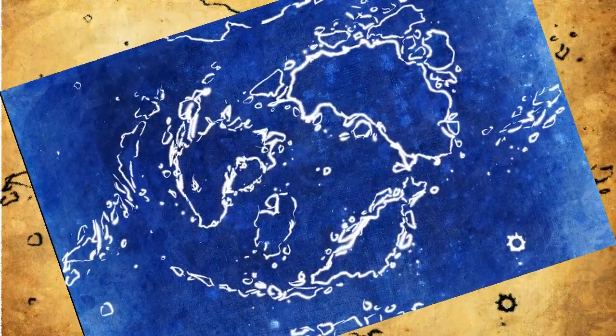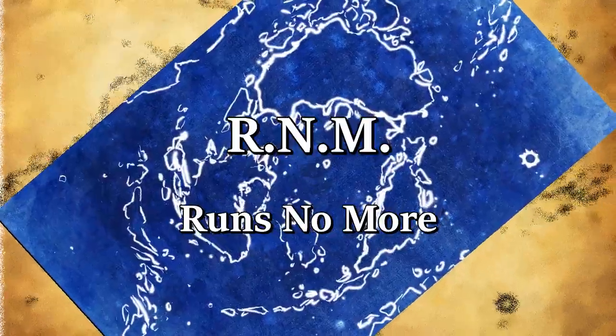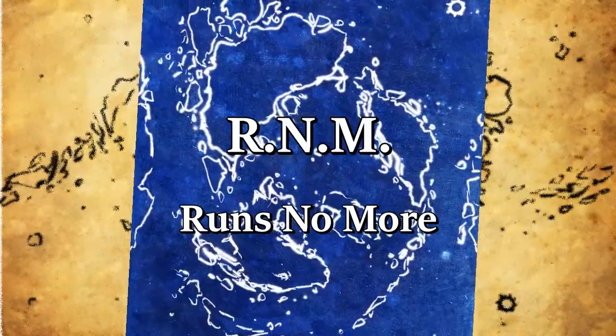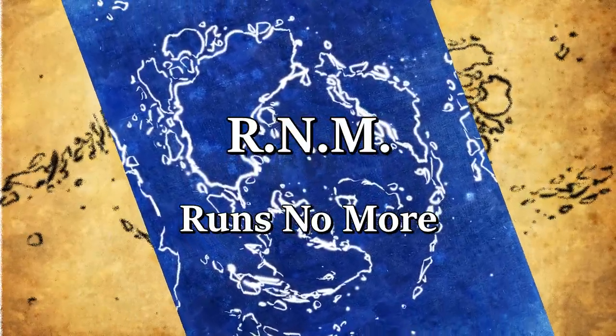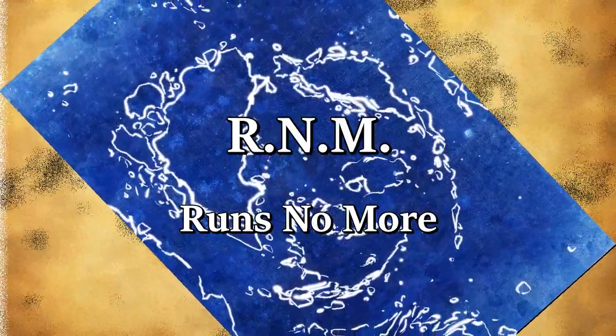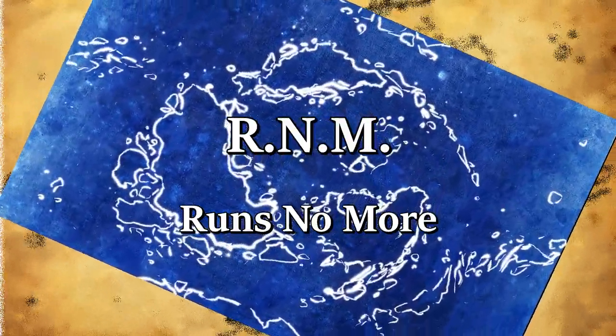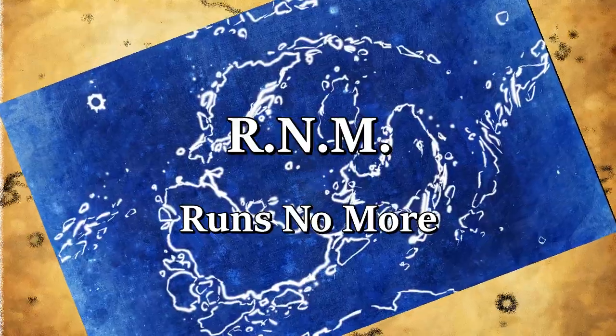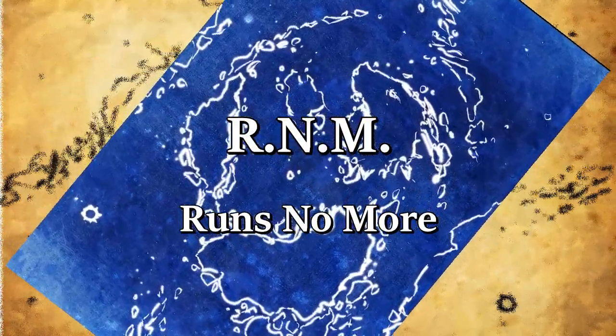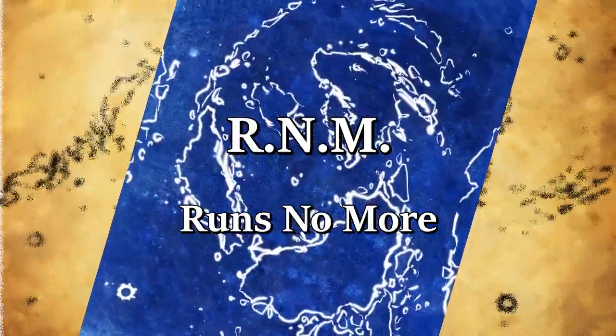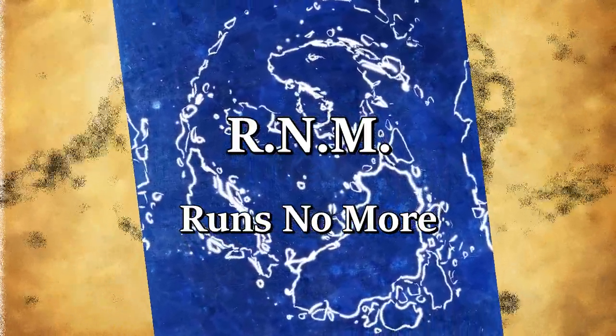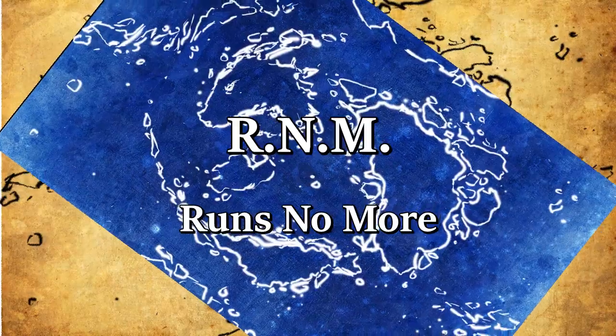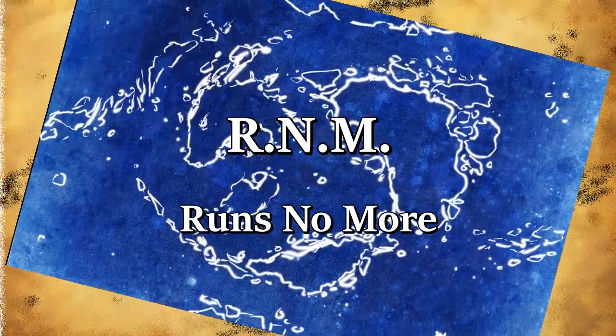And finally, option three, runs no more. Or R-N-M, Romeo November Mike. Stoneshafer's target has been caught by the forces that are chasing him, and is either dead, or being held for another purpose. Daragon would need to not only find who took his quarry, but where they had him, and how to recover him. Remember, that is R-N-M, Romeo November Mike, for runs no more.